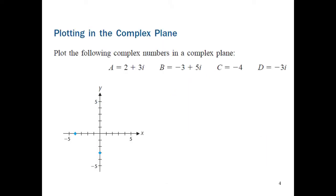Let us try plotting some complex numbers in the complex plane. The first is a equals 2 plus 3i. Having a positive 2 for x and positive 3 for y tells us that this complex number should be in quadrant 1. Note that it should be 2 units to the right and 3 units upward from the origin.